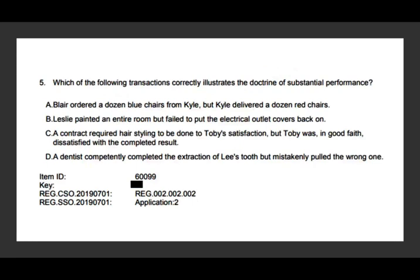Question five: which of the following transactions correctly illustrates the doctrine of substantial performance? Substantial performance means: did you do your job fully all the way to the end? This is more of a business law concept. Option A — Blair ordered a dozen blue chairs from Kyle, and Kyle delivered a dozen red chairs. You sent 12 chairs, but they're not the chairs ordered. You did not substantially perform because those are not the chairs specified in the contract — that's a breach of contract. So A is out.